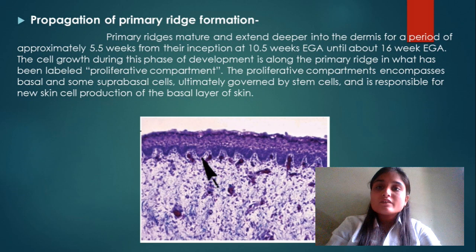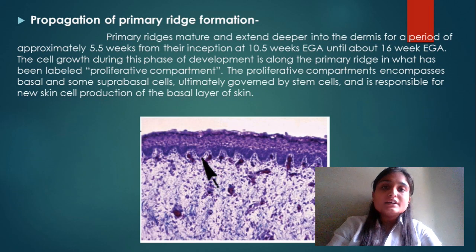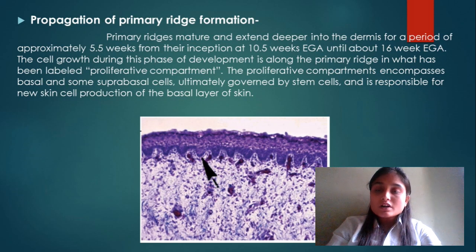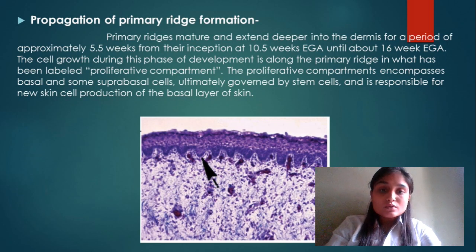Propagation of primary ridge formation: primary ridges mature and extend deeper into the dermis over a period of approximately 5.5 weeks, from their inception at 10.5 weeks EGA until about 16 weeks EGA. Primary ridges become mature and extend deeper into the dermis, taking approximately 5 to 5.5 weeks in total.